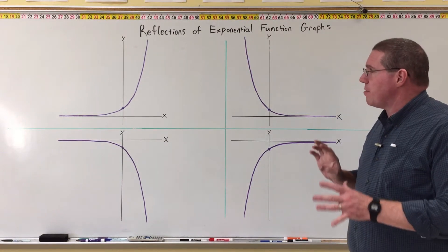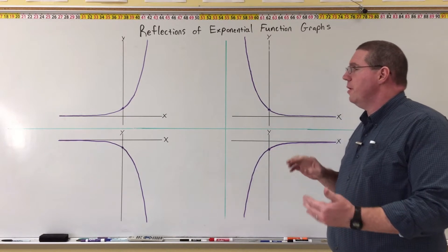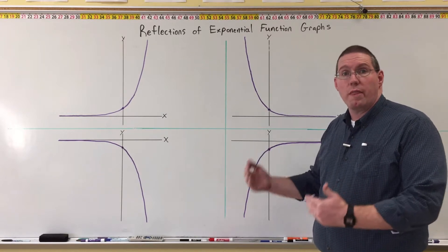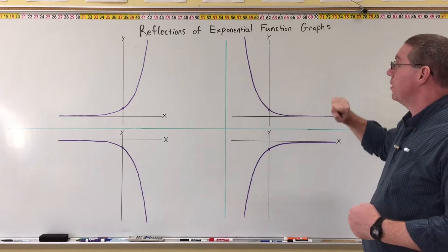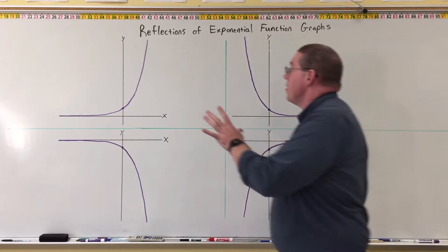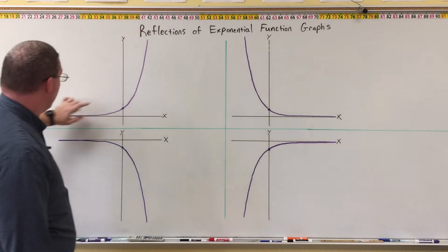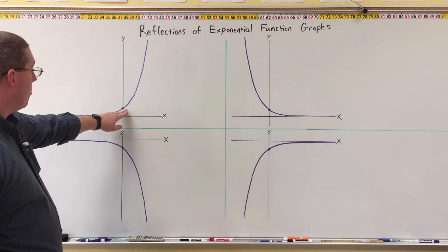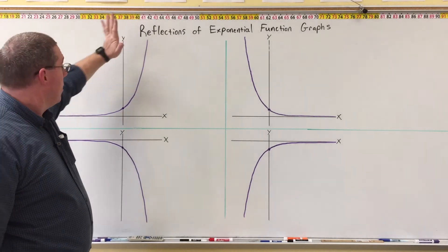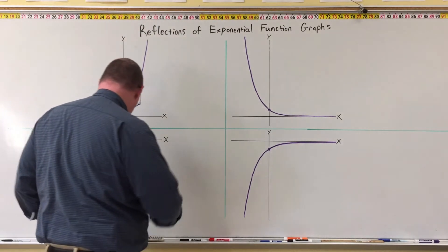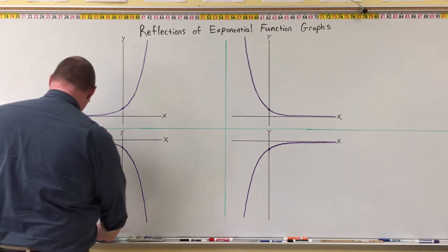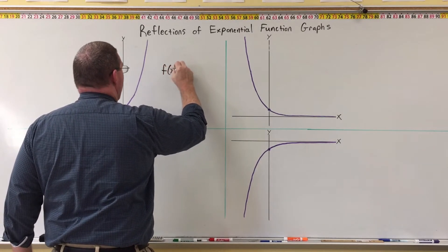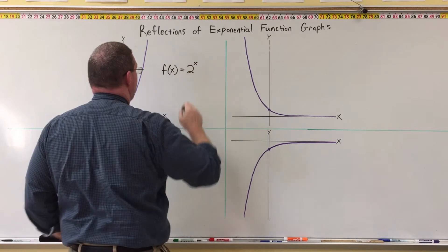What I want to show you is, now that we know the basic shape of an exponential function and we can look at the graph and identify what the base is, I want to talk about reflections of exponential function graphs. This is the shape of an exponential function graph — it goes flat to the left as it approaches negative infinity, it goes through the point (0, 1), and then it goes steep. This is the graph of f(x) = 2^x.